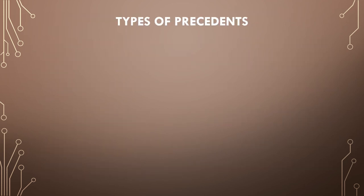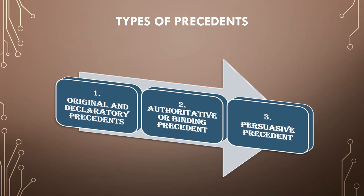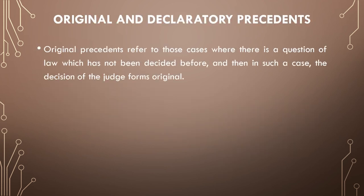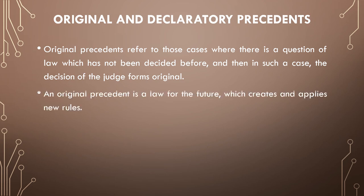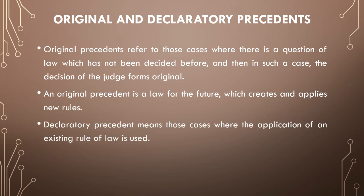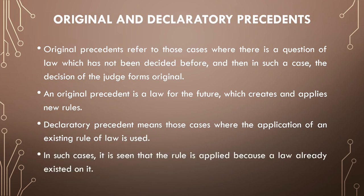Next are the types of precedent. The first is original and declaratory precedents. The second is authoritative or binding precedent. The third is persuasive precedent. Original precedent refers to cases where a question of law has not been decided before, and in such a case the decision of the judges forms original precedent — a law for the future which creates and applies new rules. Declaratory precedent means cases where the application of an existing rule of law is used, where the rule is applied because a law already existed on it.